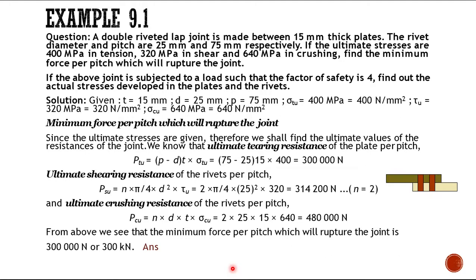The ultimate tearing resistance is PT = (p − d) × t × sigma_tu. Substituting: (75 − 25) × 15 × 400 = 300,000 N, or 300 kN.